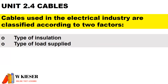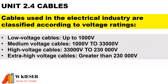Cables used in the electrical industry are classified according to two factors: the type of insulation, and the type of load supplied. They are also classified according to voltage ratings. Low voltage cables are up to 1,000 volts. Medium voltage cables are rated between 1,000 volts to 33,000 volts. High voltage cables are rated between 33,000 volts to 230,000 volts. Extra high voltage cables are greater than 230,000 volts.